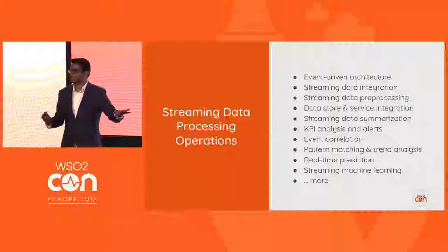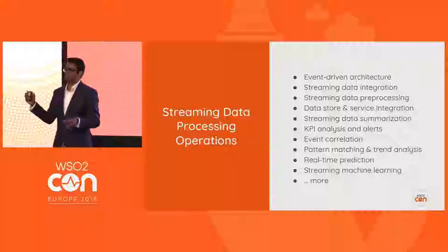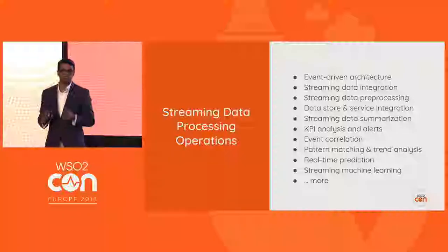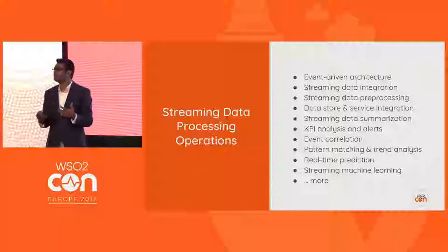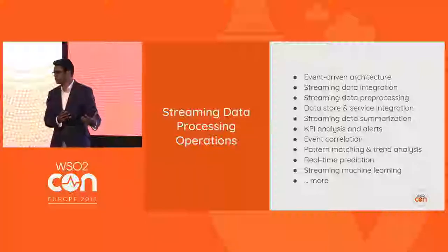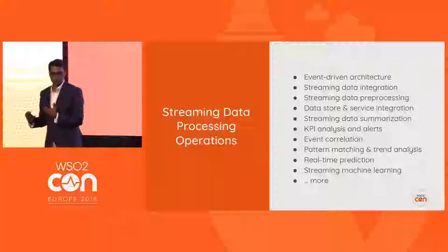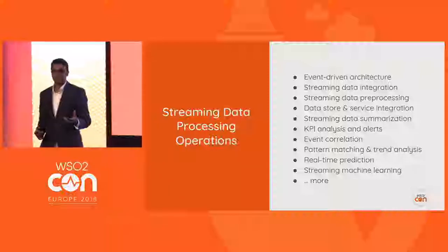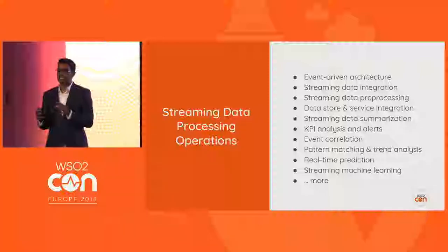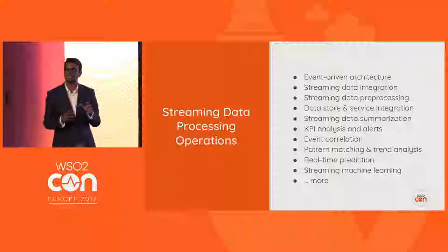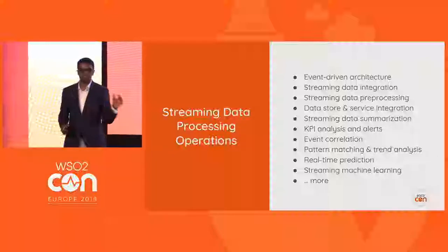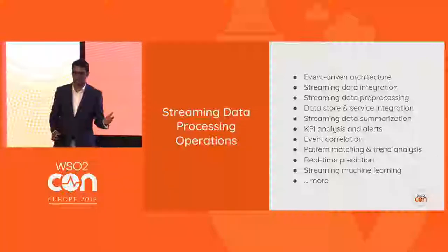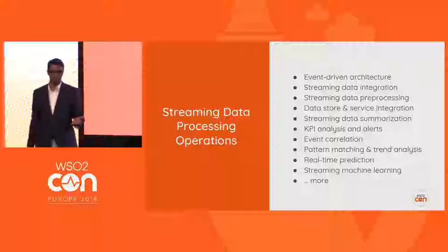Instead of saying 'this API is invoked' repeatedly, we want to say 'how many APIs were invoked in the last one minute?' — that would be more meaningful information. We also have KPI and alerts: keep track of what's happening and alert if conditions are not going the way we want.